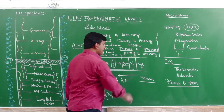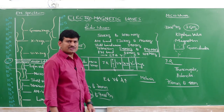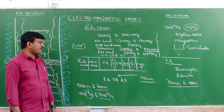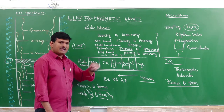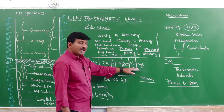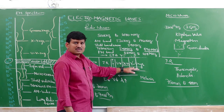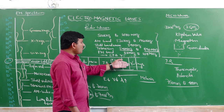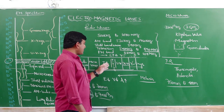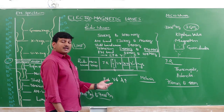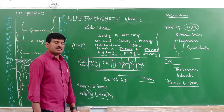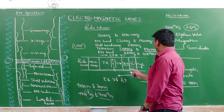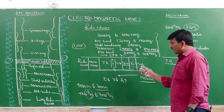Gamma rays are the highest-energy radiations. They are produced by radioactive decay. Gamma rays are more penetrating than UV radiation and X-rays, and they are used in the treatment of cancer. The different radiations each have advantages and disadvantages in their respective applications.